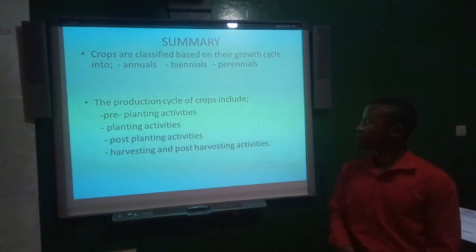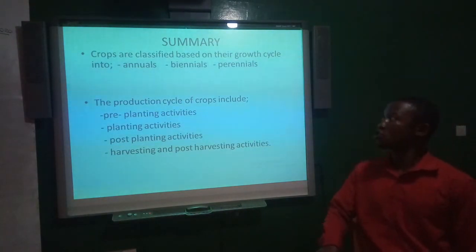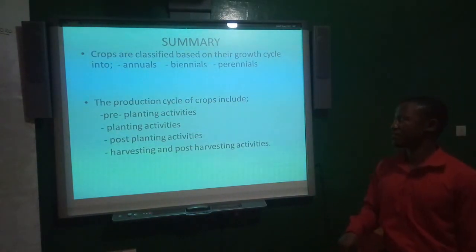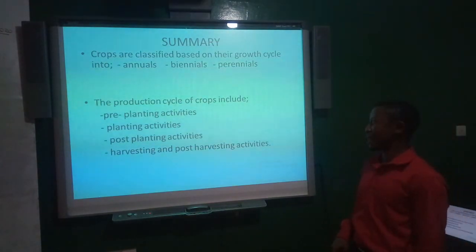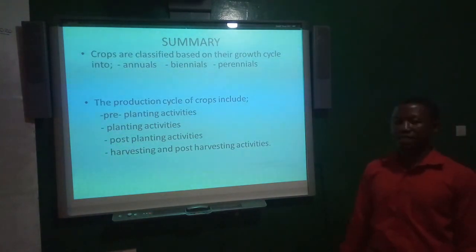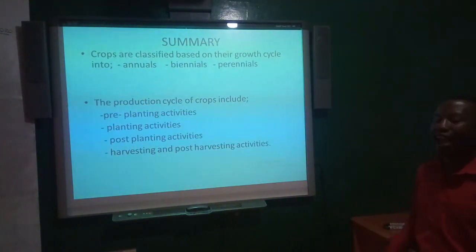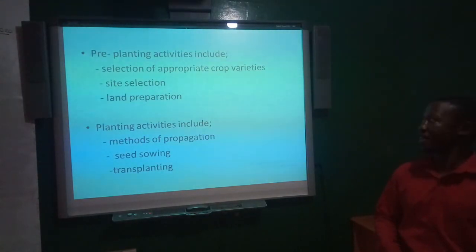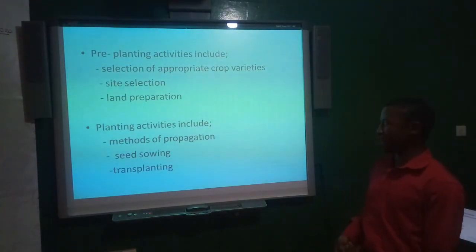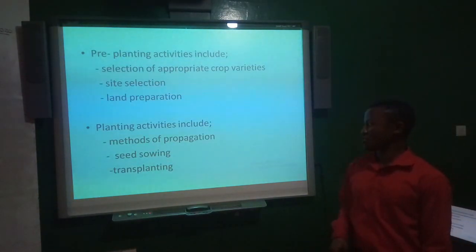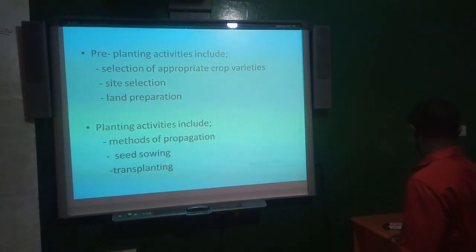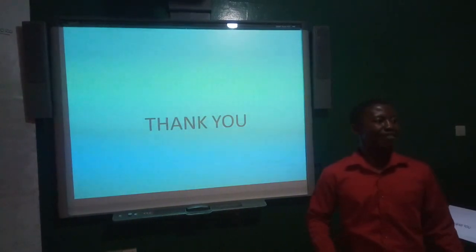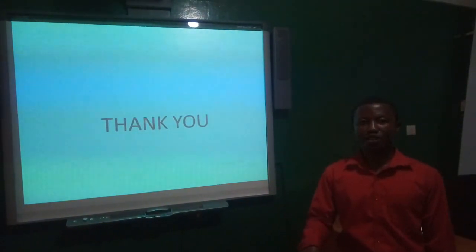In summary, crops are classified based on their growth life cycle into annuals, biennials, and perennials. The production cycle includes pre-planting activities, planting activities, post-planting activities, and harvesting and post-harvesting activities. Pre-planting activities include selection of crop varieties, site selection, and land preparation; while planting activities include methods of propagation, seed sowing, and transplanting. At our next meeting, we will look at post-planting activities as well as harvesting and post-harvesting activities. Thank you and God bless.